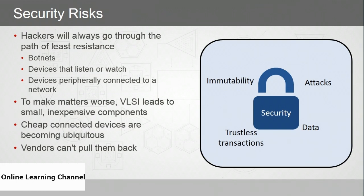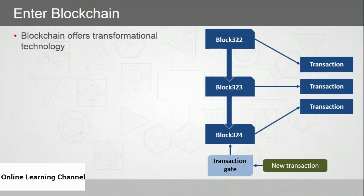What's the point of recalling millions of devices that cost under $10? Vendors could issue warnings, but that only helps people who see them. As devices become smaller, cheaper, and more disposable, people may just toss them in a box — but as long as those devices have power and a connection, they're a security risk. There is a possible solution to the inevitable problems associated with IoT: blockchain, the transformational technology we all hear about.